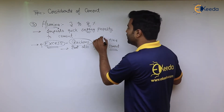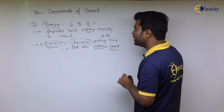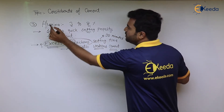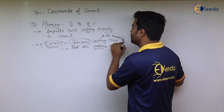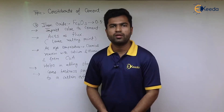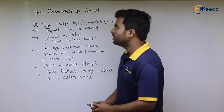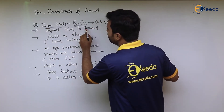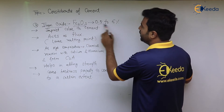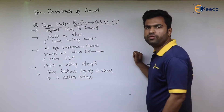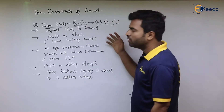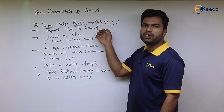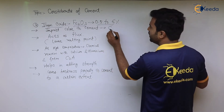The general initial setting time of cement should be at least 30 minutes, so if alumina is added in excess there are chances it may reduce that setting time. The next constituent is iron oxide; its chemical formula is Fe₂O₃ and its percentage ranges from 0.5 to 6 percent. Its function is that it gives a greenish-gray color to the cement.